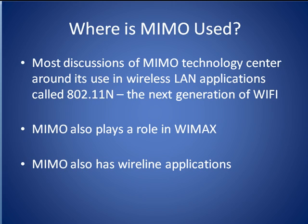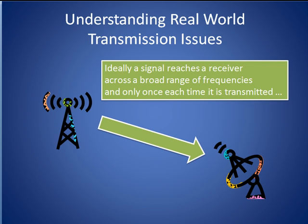Most discussions of MIMO focus on its use in 802.11n wireless LAN technology, but MIMO also plays a role in WiMAX as well as wireline applications. In this tutorial, we will mostly focus on MIMO's use in wireless LANs. To understand MIMO, let's first consider an ideal world situation in which a transmitter is sending a signal to a distant receiver. In this perfect environment, the receiver interprets all frequencies equally well and receives signals only once each time they are transmitted.